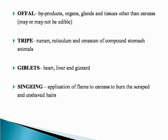Tripe is the rumen, reticulum, and omasum of ruminant stomach animals. Giblets refer to the heart, liver, and gizzard.